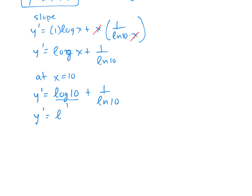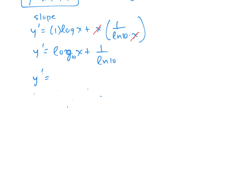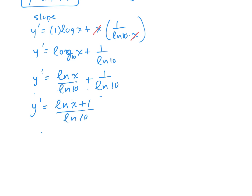To get a common denominator, I'll convert log(x) (base 10) to ln(x) over ln(10) using the change of base formula. That gives y prime equals (ln(x) + 1) over ln(10). Substituting x equals 10, the slope is (ln(10) + 1) over ln(10).